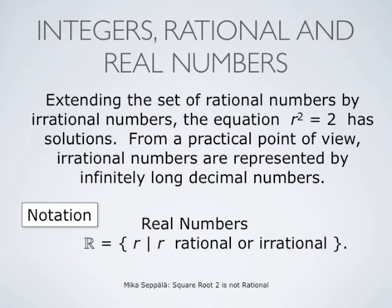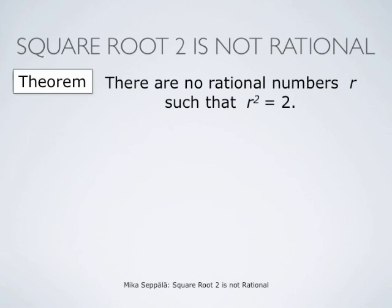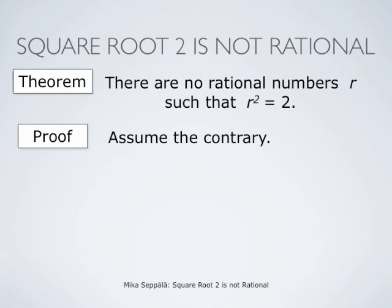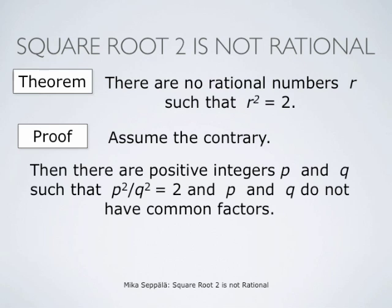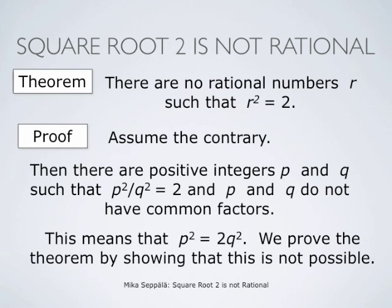These plus and minus square root of 2 are irrational numbers that can be represented by infinitely long decimal numbers. We show that there are no rational numbers R such that R squared equals 2, by assuming first the contrary. So we assume that there are positive integers P and Q such that P squared divided by Q squared equals 2, and that P and Q do not have common factors other than 1. If P squared divided by Q squared equals 2, then P squared equals 2 times Q squared. We prove that this is not possible.